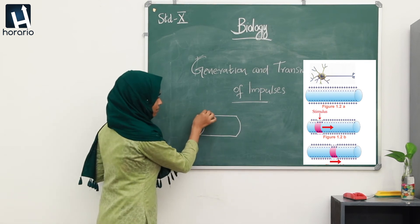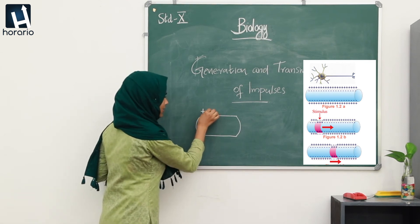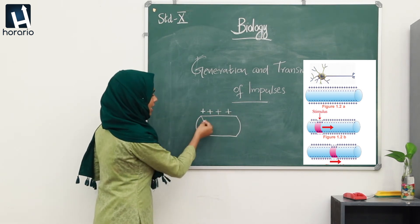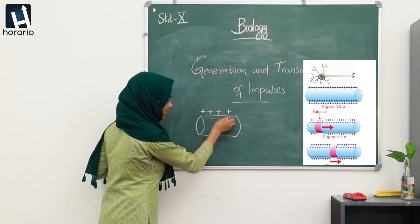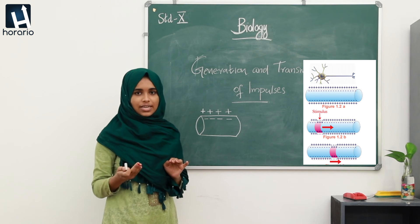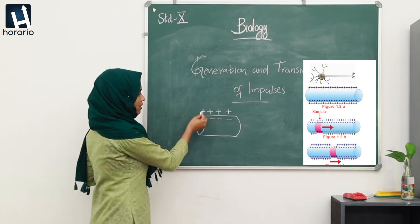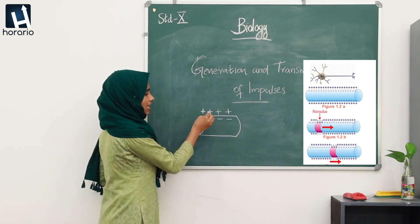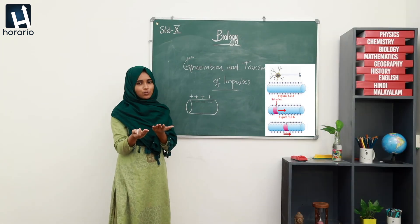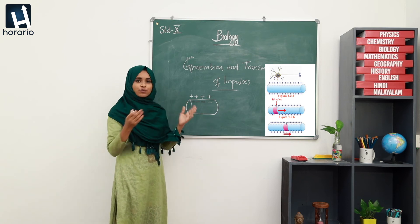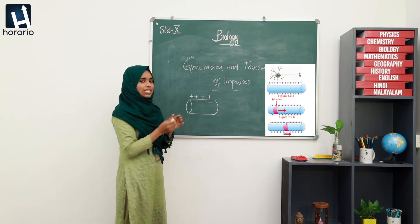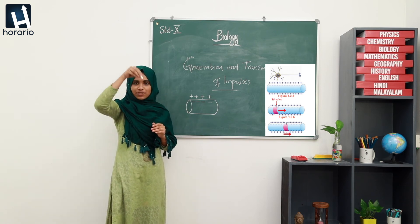Outside the cell membrane, the axon has a positive charge, and inside it has a negative charge. This is not only the case for axons, but for the whole cell — outside the membrane it has positive charge and inside the membrane it has negative charge. So they maintain an equilibrium, and this is due to the distribution of specific ions.